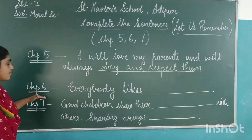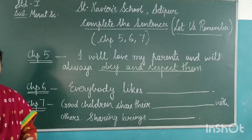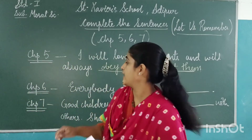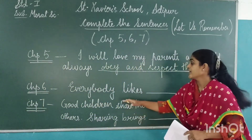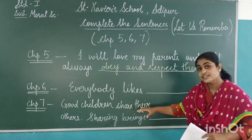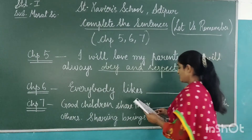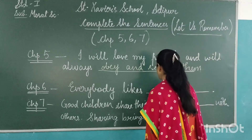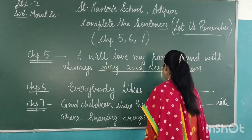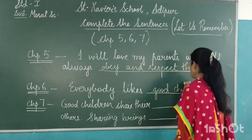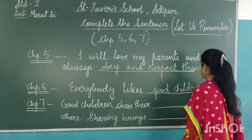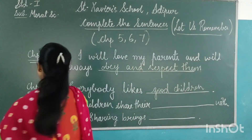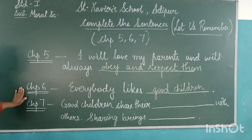Next is chapter number 6. Good children are always nice. Nice, good children are respectful and well-behaved. This is chapter number 6.